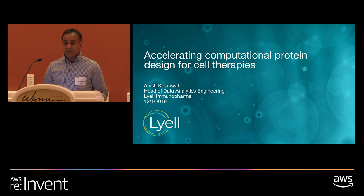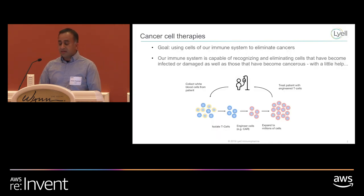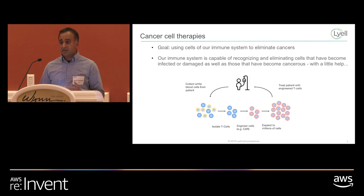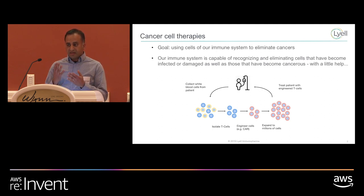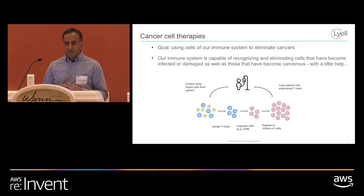I head up the data and analytic engineering group at Lyle, and I'm going to be talking about what we're doing. We are focused on cancer cell therapies. The idea behind cancer cell therapies is to use living cells from our immune system as an approach to eliminating cancers. Our immune system is capable of recognizing cancerous cells as they're coming to be, and can actually destroy them. But some tumor cells are able to evade or escape our immune system, so the idea is how can we supercharge our immune system to recognize and destroy tumor cells?